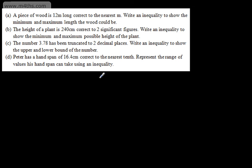In this video, we're going to look at using inequalities to represent the minimum and maximum possible values of a measurement. We've got 4 questions and we're going to write an inequality for each. In question 8, a piece of wood is 12m long, correct to the nearest metre. We're asked to write an inequality to show the minimum and maximum length the wood could be. The minimum length is often known as the lower bound, and the maximum length is often known as the upper bound.